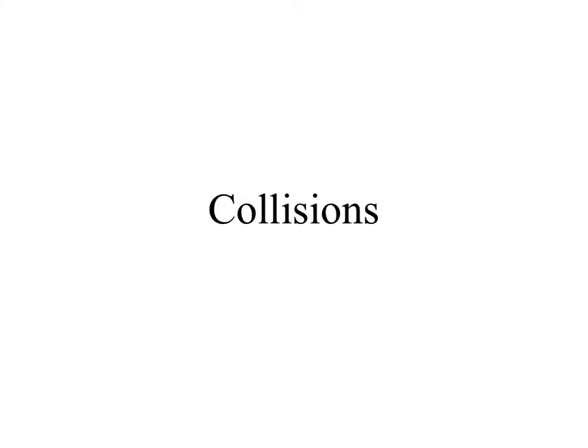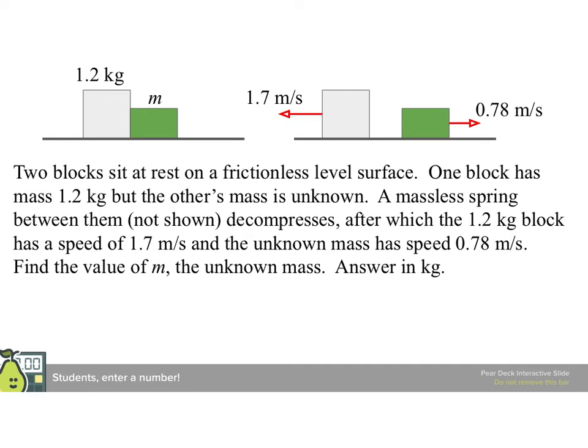One application for momentum that we use a lot is something called collisions. This is used the way people use it in English, but with a restrictive physics meaning. But first, let's practice one of our previous problems. Two blocks sit at rest on a frictionless level surface. One block has mass 1.2 kilograms, but the other mass is unknown. A massless spring between them, not shown, decompresses, after which the 1.2 kilogram block has a speed of 1.7 meters per second, and the unknown mass has a speed of 0.78 meters per second. Find the value of m, the unknown mass, in kilograms.